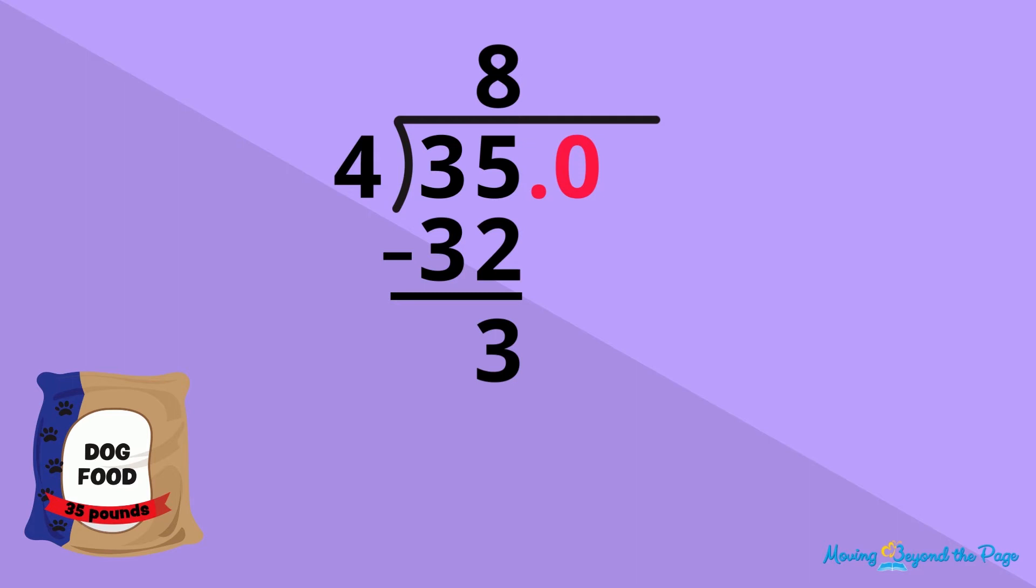Here, we can keep dividing by bringing the 0 down to make 30. Now, what's 30 divided by 4? It's 7. We still have a remainder of 2, so let's add another 0. This one will be in the hundredths place.